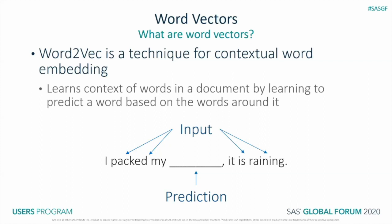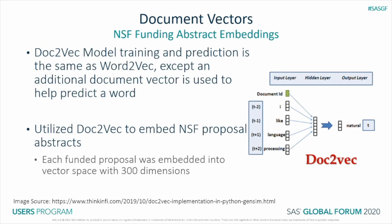How do we go from word vectors to document vectors? The data prep and training process is the same — the model still learns to predict words based on surrounding words. The difference is that the embedding now has an additional vector attached to it that represents the document, and that helps with the prediction. In our case, the document is the funding proposal abstract. It is important to note that in both the Doc2Vec and Word2Vec models, it is not the final prediction that we are interested in — it is the layers before the prediction, where words and documents are transformed into vector space. These vectors provide the weights for the prediction and are the actual word and document embeddings.